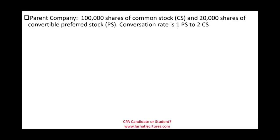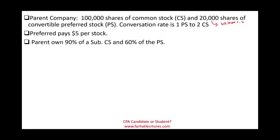Looking at this example: the parent company has 100,000 shares of common stock and 20,000 shares of convertible preferred stock. The conversion rate is 1 preferred converts to 2 common, so if all preferred are converted, they would convert into 40,000 common shares. The preferred pays $5 per share dividend. The parent company owns 90% of the sub's common stock and 60% of the sub's preferred stock.